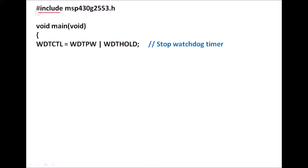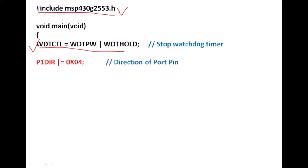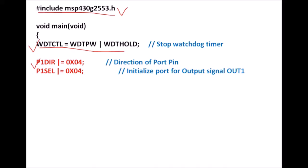To write the program, first include the header file MSP430G2553.h — this depends on which MSP430 microcontroller you are using. In the main program, the first instruction disables the watchdog timer. Then select the direction of port P1 by initializing P1DIR with 0x04. Next, select the pin function by initializing P1SEL with 0x04. Then TACCR0 is initialized with 0xFF, which relates to the total period of the PWM signal. Since this register is 8-bit, the full count is stored here.